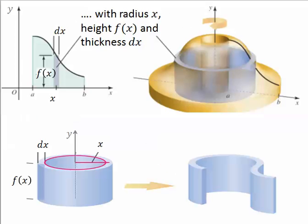The cylindrical shell will have a radius of x, height f(x), and thickness dx.